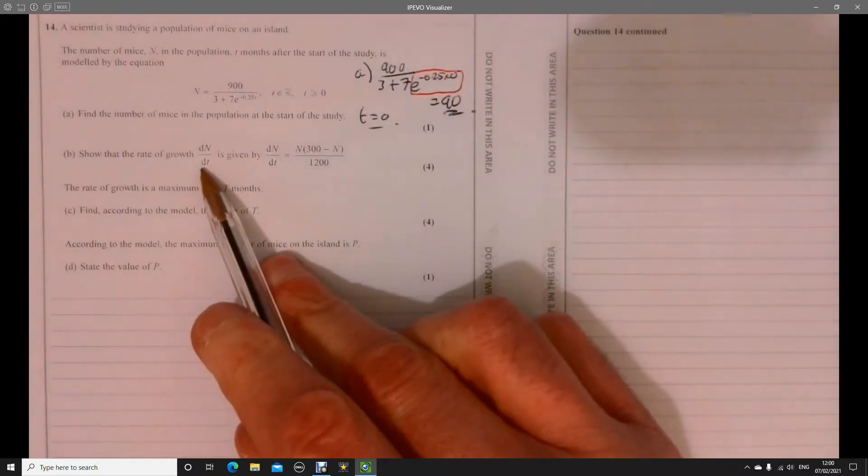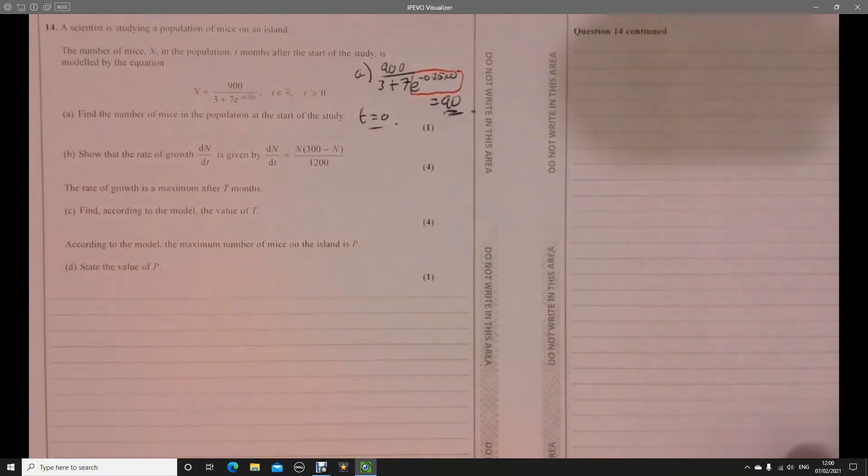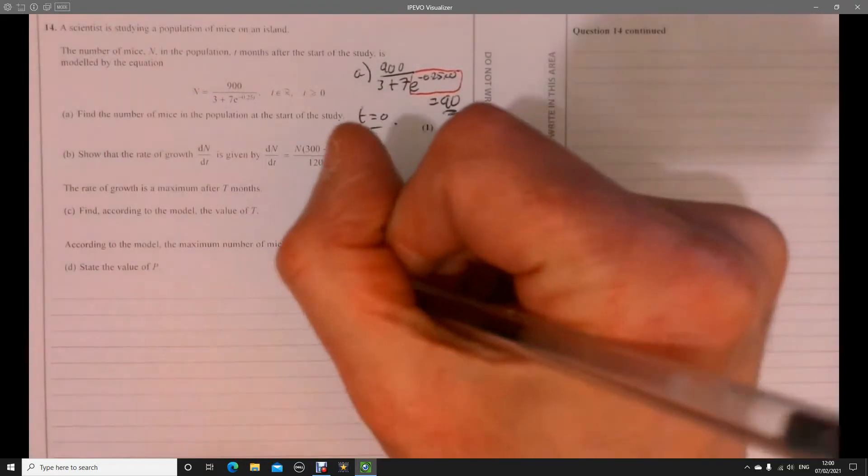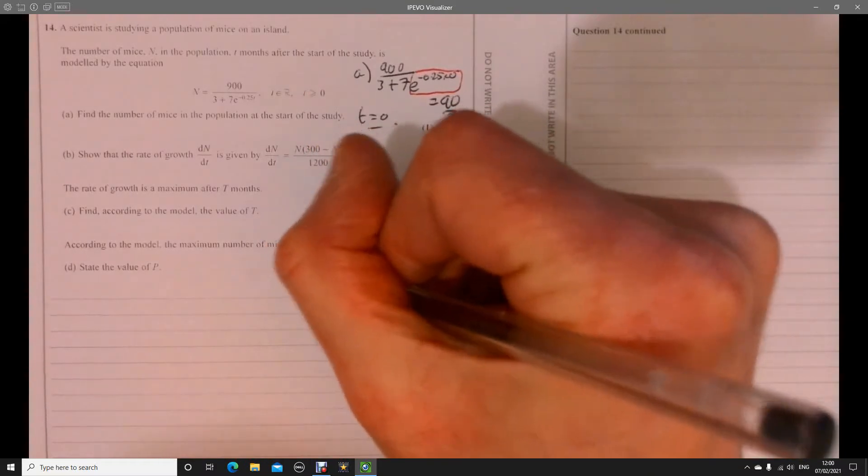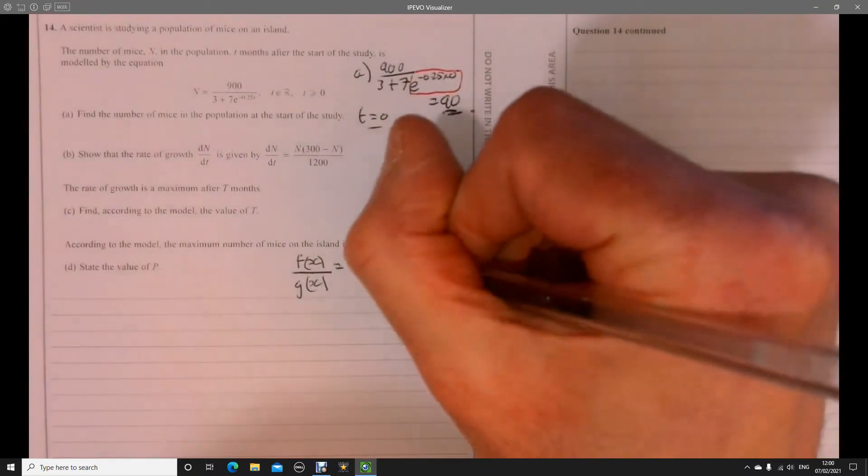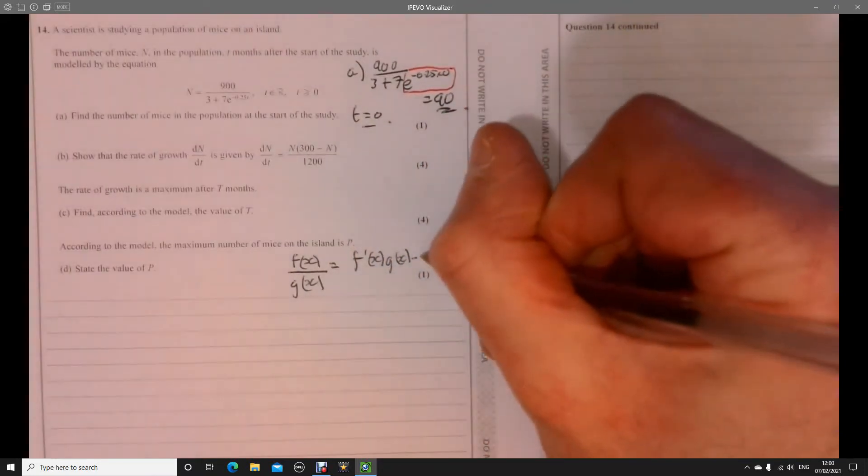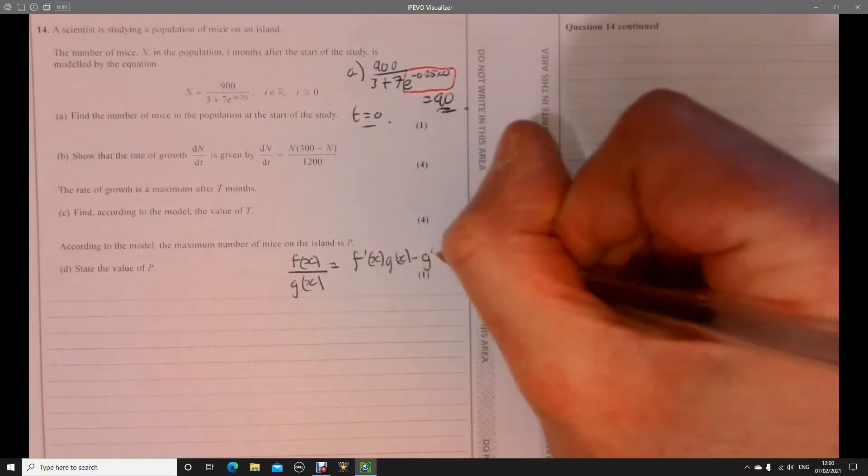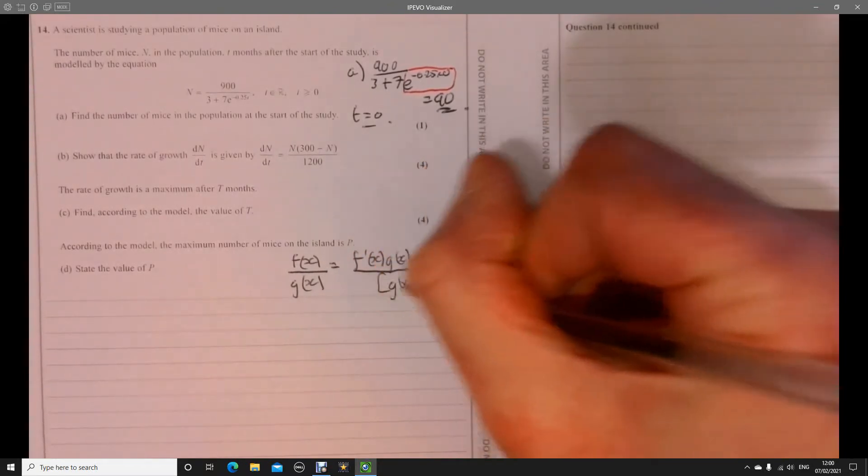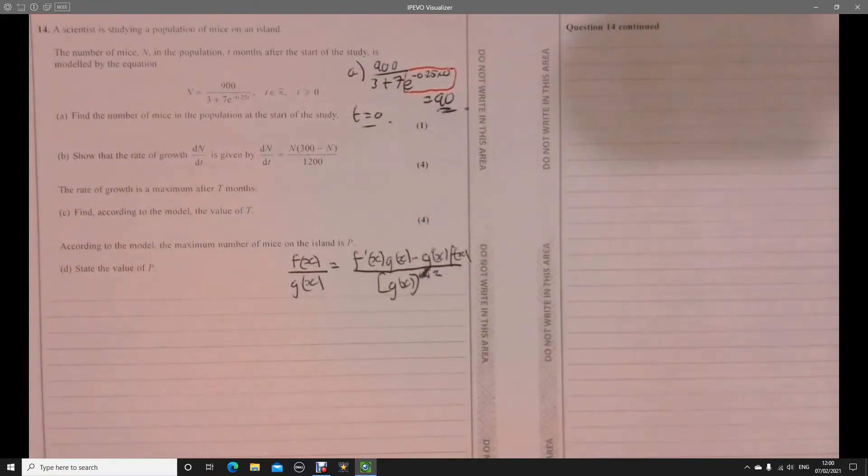So part b. This is the juicy bit of this question. It says dn over dt, so that's telling us we've got to differentiate this thing up here. We are told in the formulae book about how to differentiate, and it's just going to be quotient rule. I'm just going to quickly jot down exactly what it says in the formulae book.